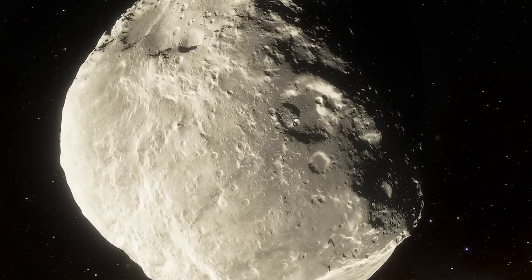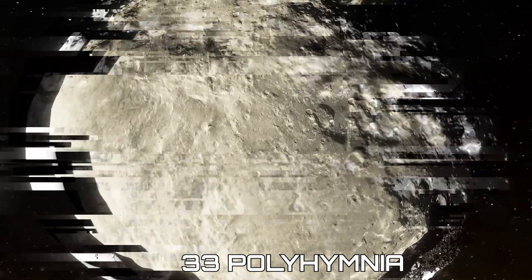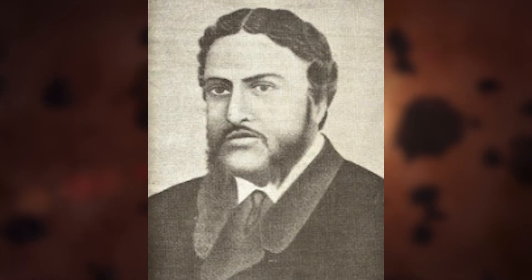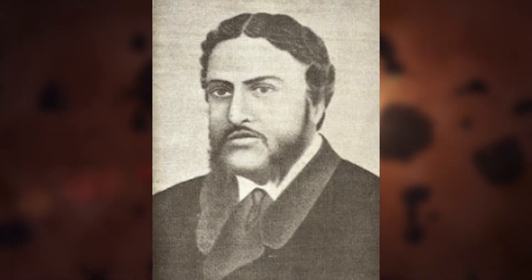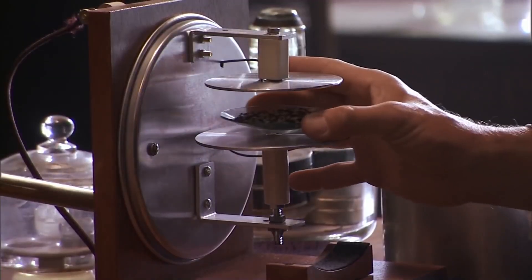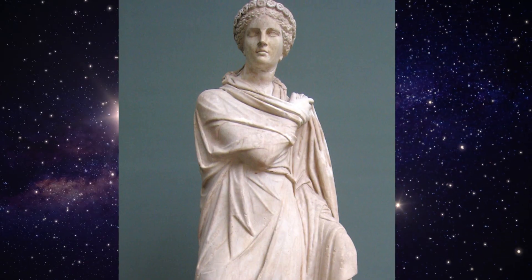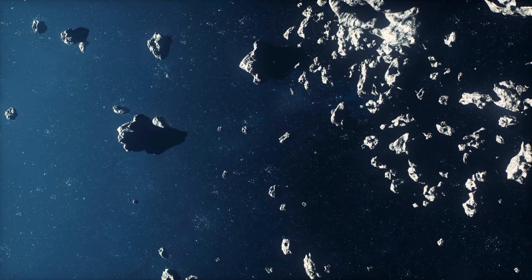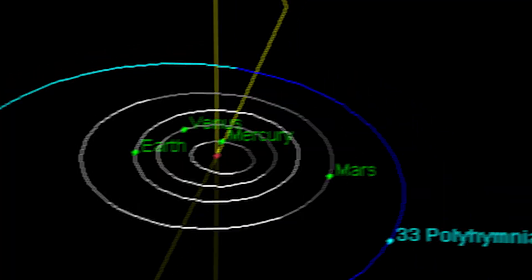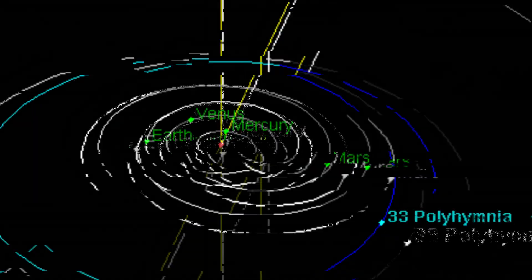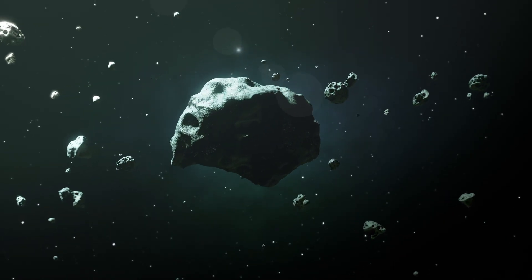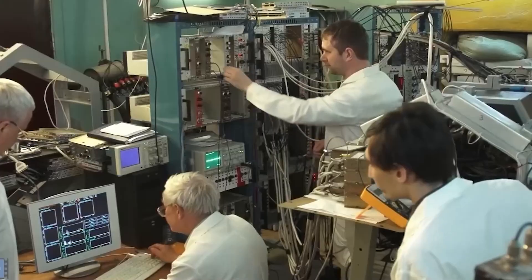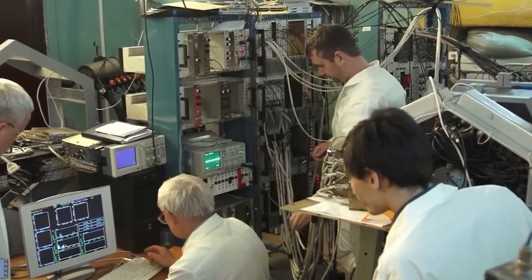The interesting asteroid in question is called 33 Polyhymnia. It's a part of our solar system and was discovered by a French astronomer named Jean Chacornac on October 28, 1854. It was named after the Greek muse of song and dance, Polyhymnia. Polyhymnia is located in the main asteroid belt, which is a region between Mars and Jupiter. It's not too big, with a diameter of about 34 miles.